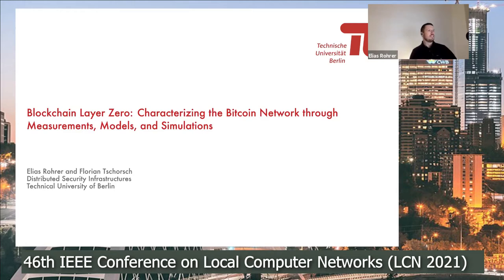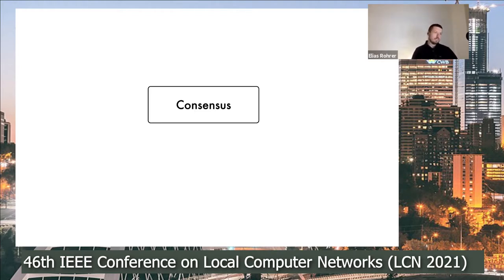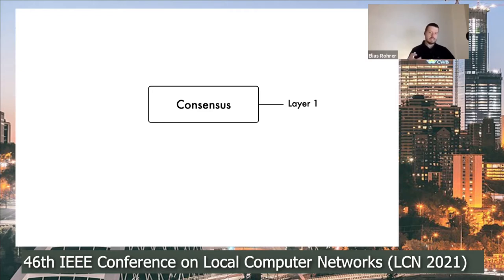You see in the title there's blockchain, there's Bitcoin. The central aspect of blockchain networks is to facilitate a consensus, and in the particular case of Bitcoin, it's consensus over the ordering of financial transactions. The consensus layer in these blockchain systems is referred to as the first layer, as the central layer.